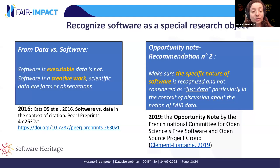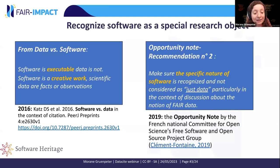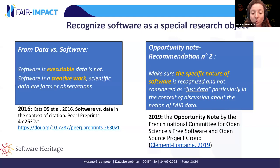Why do we need to recognize software as a special research object? From the data versus software article, we see that software is different from data because software is executable and is more similar to articles by being a creative work, while data consists of facts and observations. Software is written by humans for humans to read. The French National Committee for Open Science also notes that the specific nature of software must be recognized and not considered as just data.